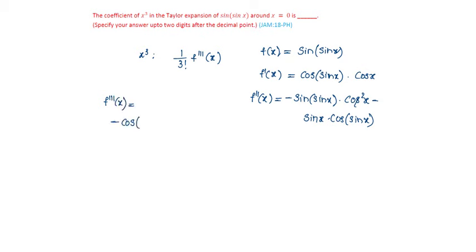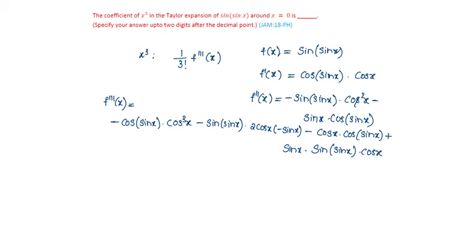Minus cos(sin x)·cos³x minus sin(sin x)·cos²x. The derivative is 2 cos x into minus sin x·cos x, minus cos x·cos(sin x), plus sin x·sin(sin x)·cos x.